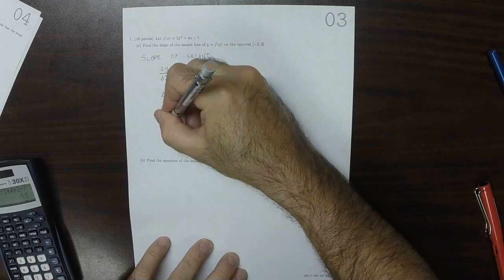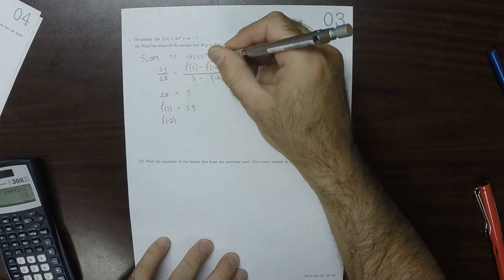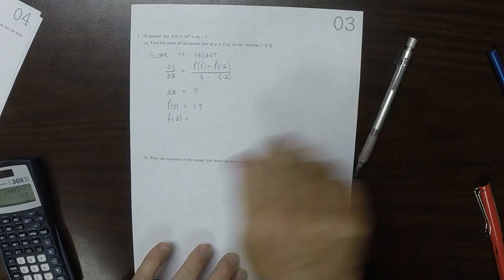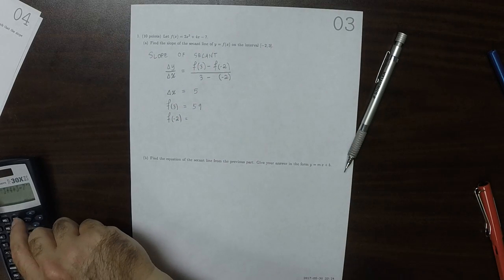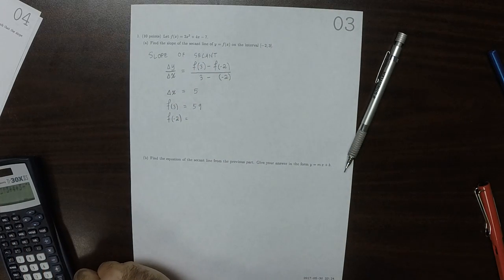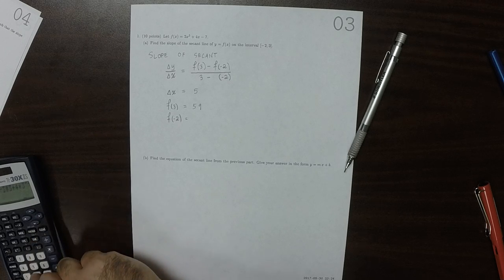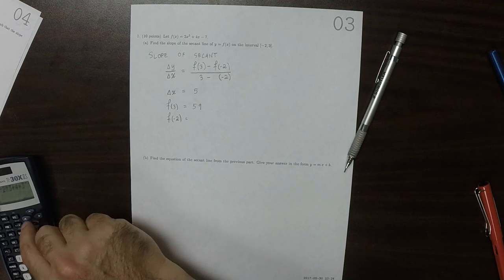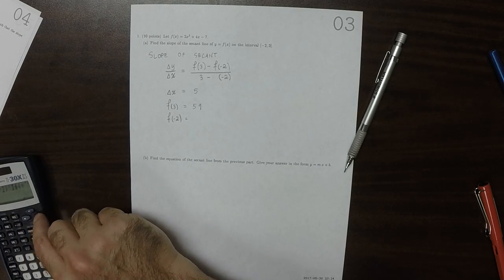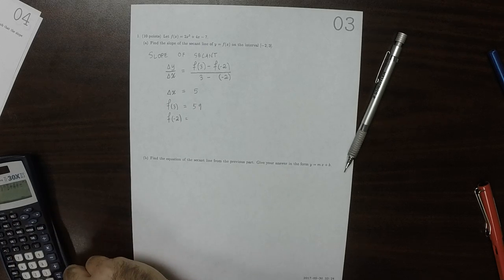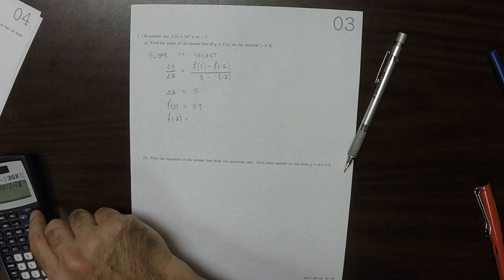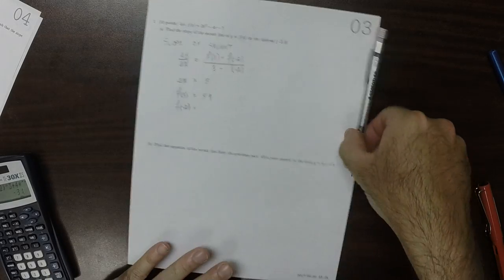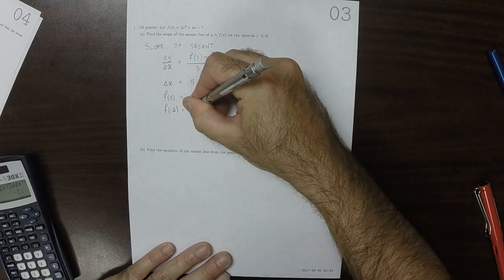And f of negative 2—that would be 2 times negative 2 cubed plus 4 times negative 2 minus 7—is negative 31.